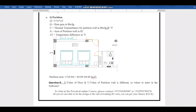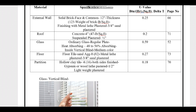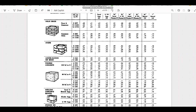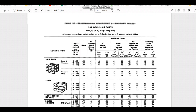We need to find the U-value for wall, roof, floor, and glass. Let's start with the external wall. The specification is a 12-inch solid brick wall with a weight of 123 lb/ft², finished with metal lathe plaster and 3/4-inch sand plaster. Referring to Carrier Handbook page 66, Table for transmission coefficients of masonry walls, we identify the 12-inch solid brick at 123 lb/ft² with this finishing.